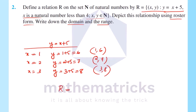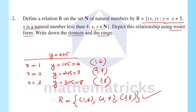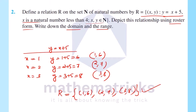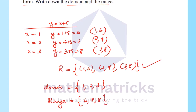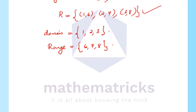R in roster form is equal to {(1,6), (2,7), (3,8)}. Domain is the set of all first elements of the ordered pairs: {1, 2, 3}. Range is the set of all second elements of the ordered pairs: {6, 7, 8}.